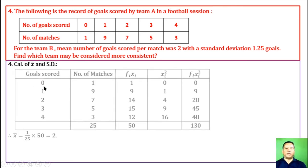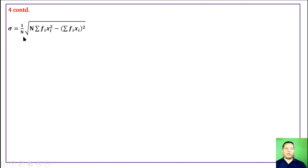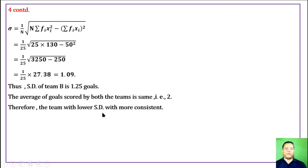Calculation of the mean and standard deviation. The goals scored and number of matches are given. Thus, the means of both teams are the same. Standard deviation of team A is calculated using the respective formula and we get 1.09. The standard deviation of team B is 1.25 goals. The average of goals scored by both teams is the same, that is 2. Therefore, the team with lower standard deviation is more consistent. Thus, team A is more consistent than team B.